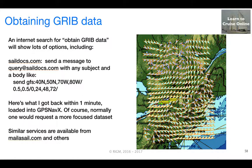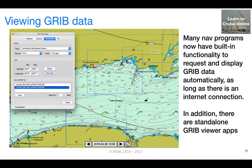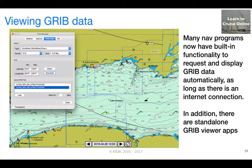Of course, normally one would request a much more focused data set. There are similar services available from MailASail.com and other organizations. Many navigation programs now have built-in functionality to request and display GRIB data automatically, so as long as you've got an internet connection, your GRIB data will be automatically updated.